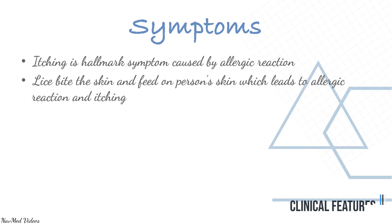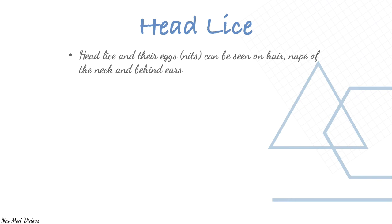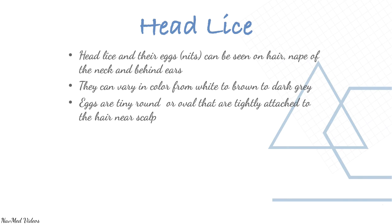Head lice and their eggs can be seen on hair, nape, and ears. They can vary in color from white to brown and gray. Eggs are tiny, round or oval, and are tightly attached to the hair near the scalp.